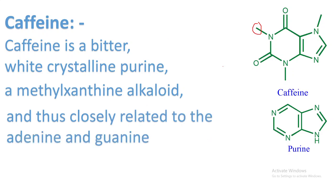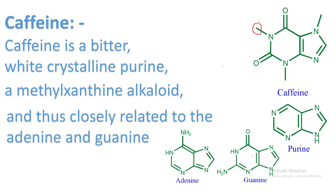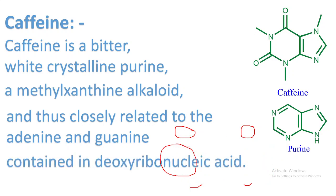Caffeine is thus closely related to adenine and guanine, which are also purine-type compounds. In adenine and guanine you can see the same type of ring structure — pyrimidine and imidazole — but with some basic differences in amino and keto groups. The ring structure is the same, and these two — adenine and guanine — are DNA bases contained in deoxyribonucleic acid.